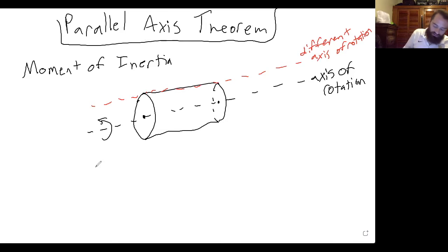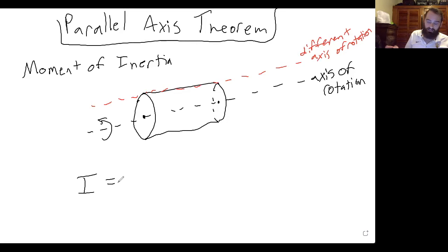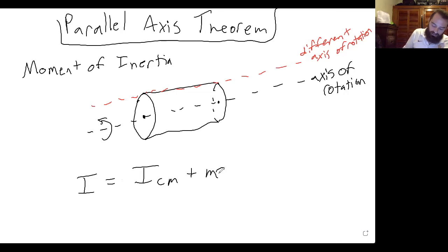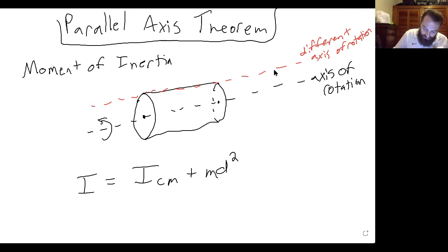This is where the parallel axis theorem comes in. Using the parallel axis theorem, which states that the moment of inertia of an object rotating about some axis that doesn't pass through the center of mass equals the moment of inertia about the center of mass plus this md² term, where d is the distance between the new axis of rotation and the center of mass.